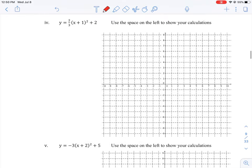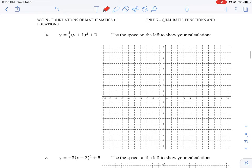Okay, so let's take a look at question number four here. So we have a little bit more of a complex form here of this equation. We have y equals two-thirds x plus one squared plus two. So we need to start to identify some of the things about the parabola here.